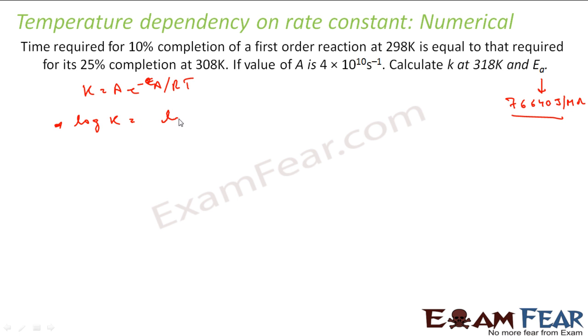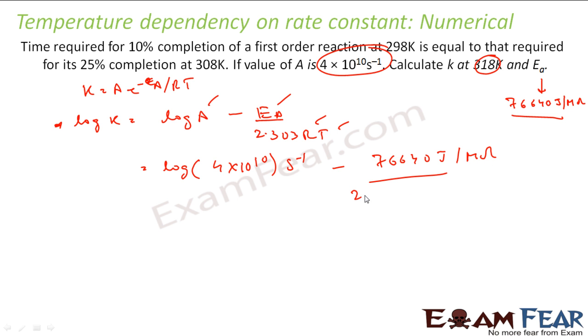Now we will take log both sides. Log K equals log A minus EA by 2.303 RT. EA is something we know. T is something we know, 318 Kelvin. R is something we know, and A is given. So let's put all the values. Log of 4 times 10 to the power 10 per second minus 76640 Joules per mole by 2.303 times 8.314 Joules per mole per Kelvin times 318 Kelvin.